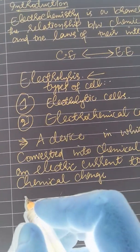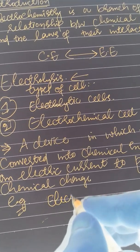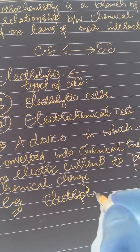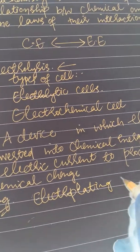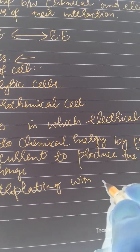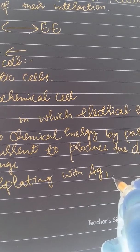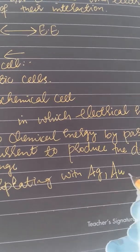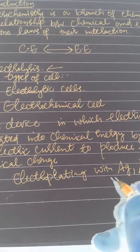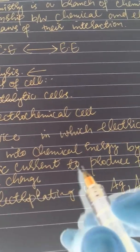Now let's look at examples. Electroplating with silver, gold, chromium. Electroplating is an example of electrolytic cell.